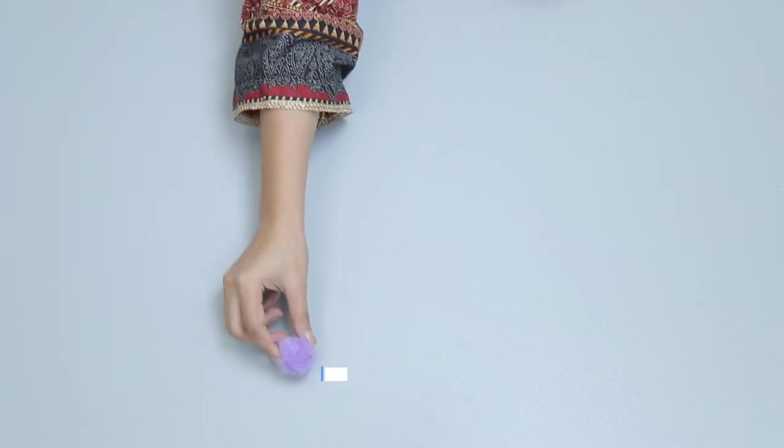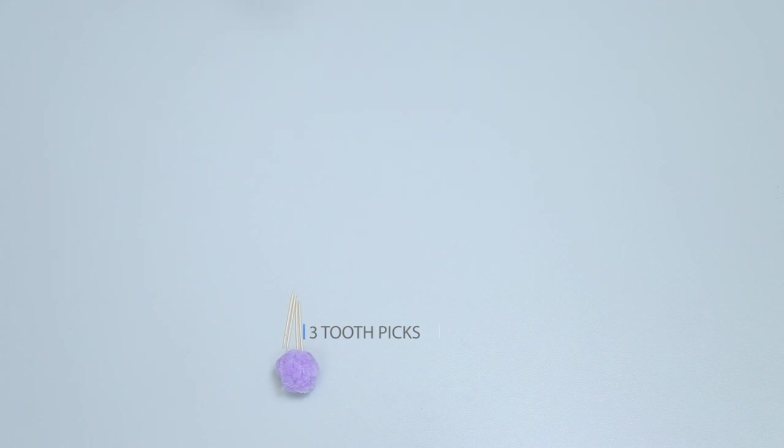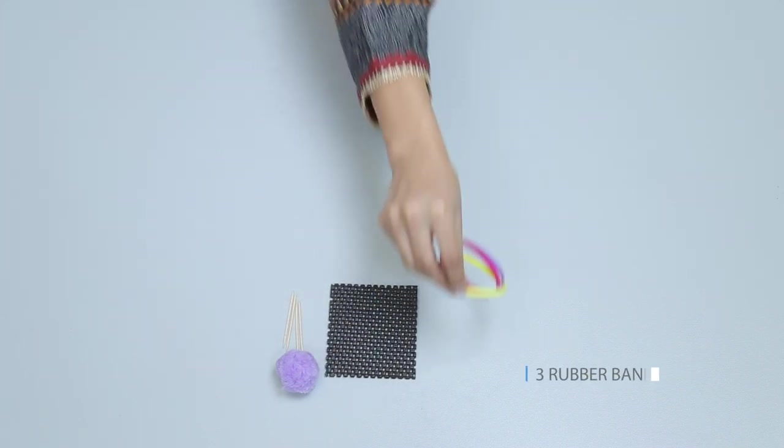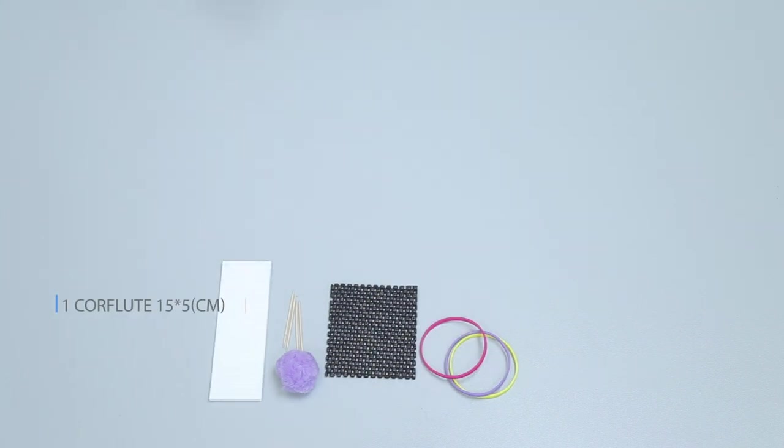Take one pom-pom, three toothpicks, one rubber mesh, three rubber bands, one corrugated flute 15 by 5 centimeter.